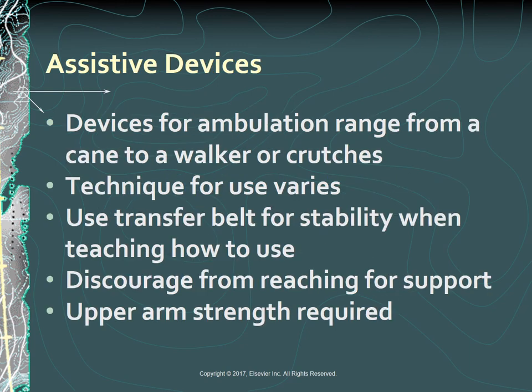Assistive devices for ambulation range from a cane to a walker or crutches. The healthcare provider decides which device is appropriate, balancing the need for maximum stability and safety versus maneuverability required in small spaces such as bathrooms. Discuss with the patient their lifestyle requirements and select a device that allows each patient to feel most secure and independent. The involved limb is usually advanced at the same time or immediately after the advance of the device. The uninvolved limb is advanced last. In almost all cases, canes are held in the hand opposite the involved extremity. Place a transfer belt around the patient's waist to provide stability during the learning stages.